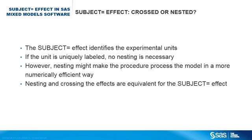To summarize: the subject equals effect is used to identify the experimental units. It defines a block diagonal variance-covariance matrix. If the unit is uniquely labeled in the dataset, no nesting is necessary. However, if you can nest, do so because nesting might result in a common subject across two or more subject effects and therefore can make the procedure process the model by blocks. This is more numerically efficient. For the subject equal effect, nesting using A nested within B or crossing using A by B is the same.